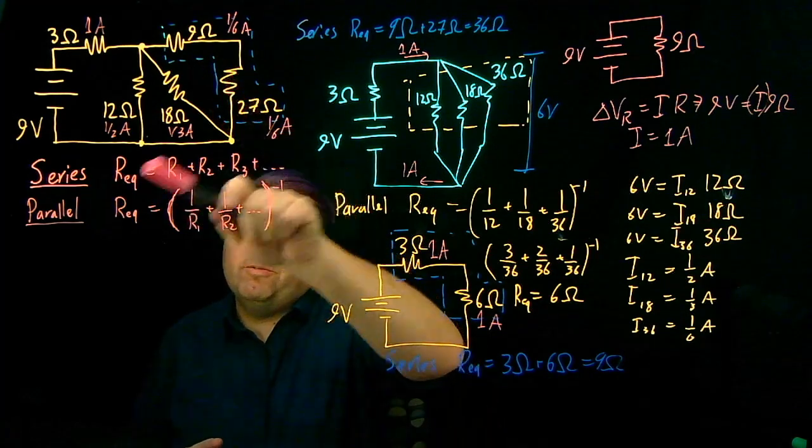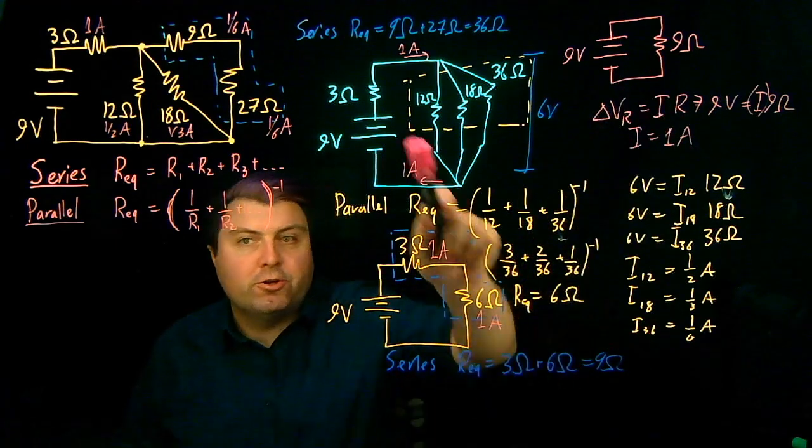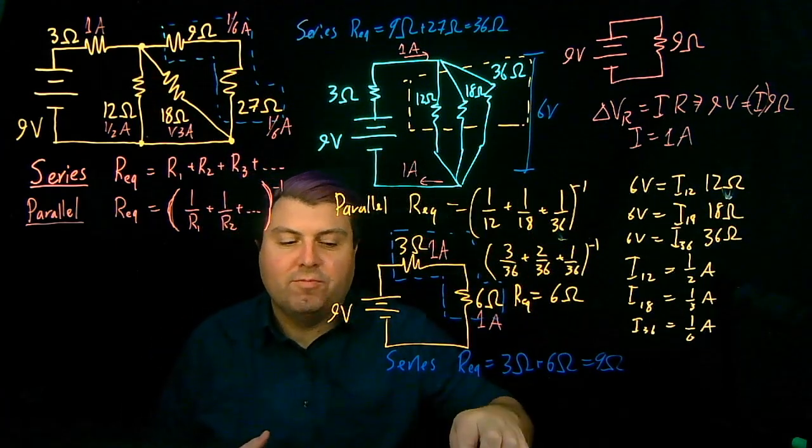So this is how we draw our circuit and redraw it as simple as possible, and then build the whole thing back up to solve for whatever we need to from this.